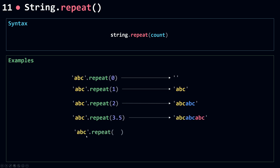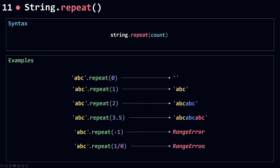If I call abc.repeat with minus one, this will return a range error, because count must not be a negative number. If I call repeat with one divided by zero, I will also get a range error, because one divided by zero is infinity. So count must be an integer greater than or equal to zero — it must not be a negative number or infinity.